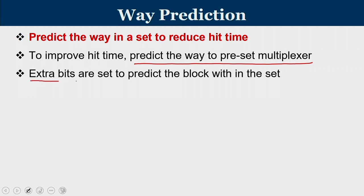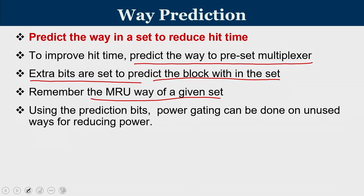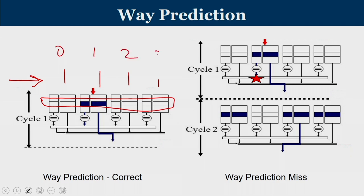We use a few extra bits that predict which block in a given set has the maximum probability for a hit. We remember the most recently used way of a given set — that is one way of looking at it — and use it for prediction. Using these bits we can also do power gating. Consider a 4-way associative cache: these are the 4 different lines in a given set. We predict that way 1 has a possibility of a hit.